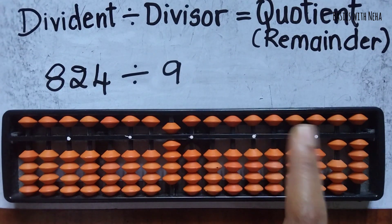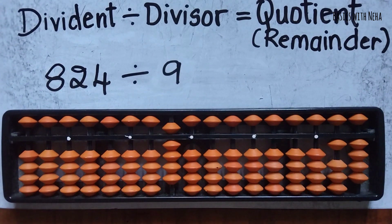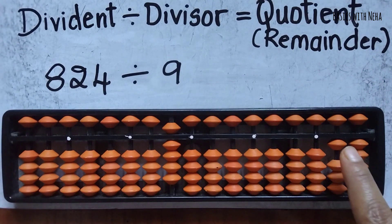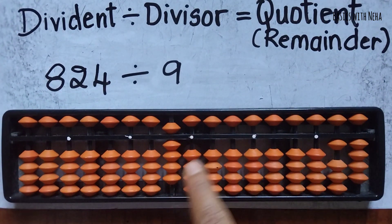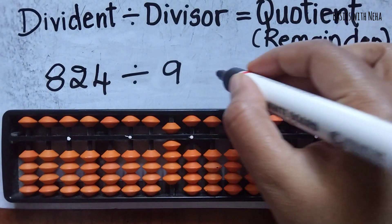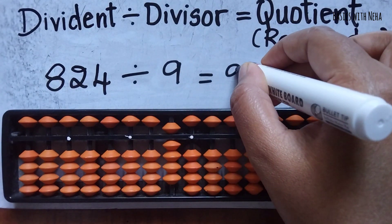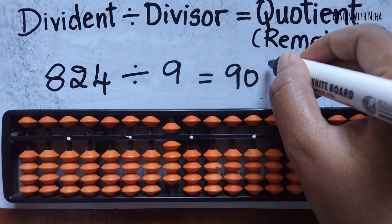You can continue for decimal places, but when teaching kids on the abacus this should be taught only up to this point — first writing the remainder, then the quotient. The answer is 90 and the remainder is 14.